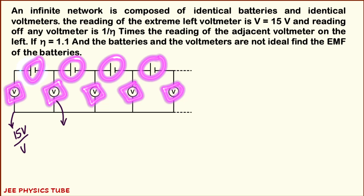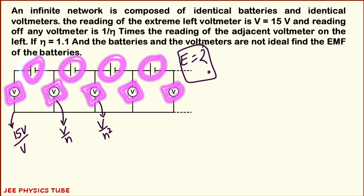For simplicity, we will call eta as N. So this has a reading of V by N, the next will have a reading of V by N square, and so on. So these are the readings given. We have to determine the EMF of the cell — that is what we have to determine in this question.